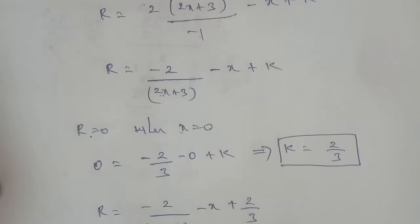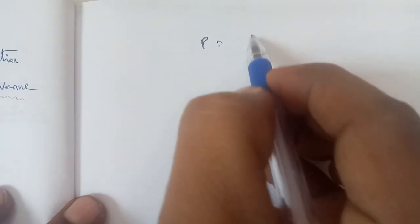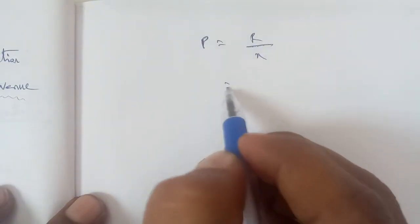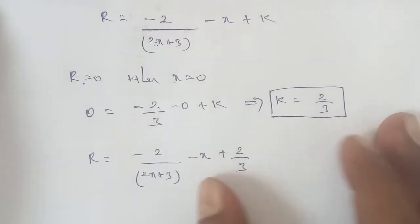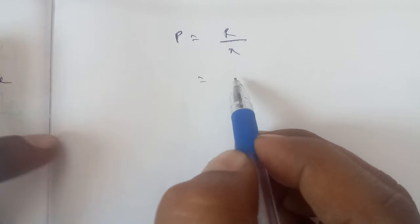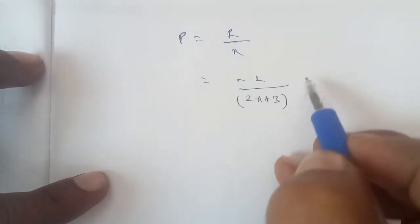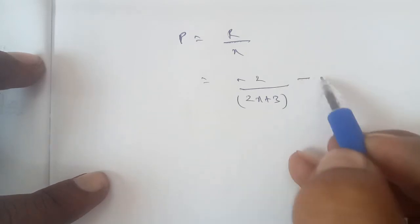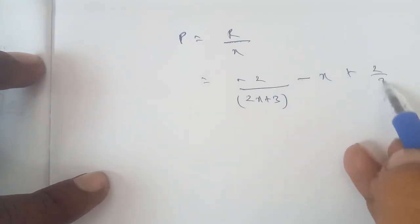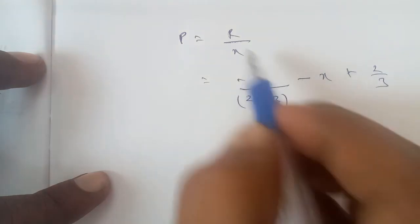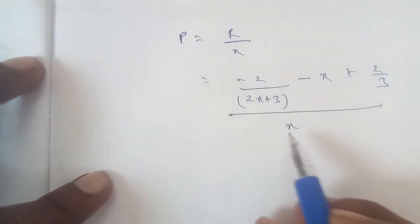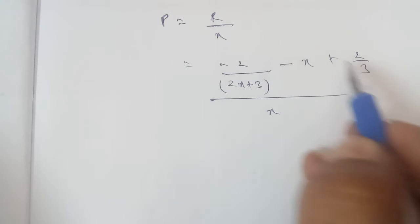Next, the average revenue formula: p equals R by x. So the demand function formula p equals R by x, and R equals minus 2 by (2x plus 3) minus x plus 2 by 3. Dividing by x gives p.